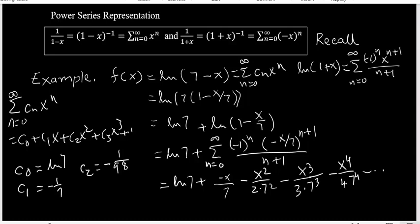And c3 will give you negative 1 over 3 times 343 and so on. All right. We are done.